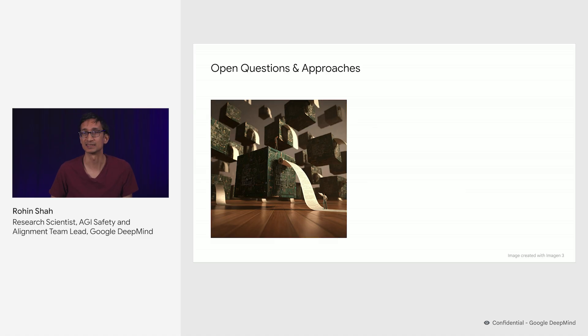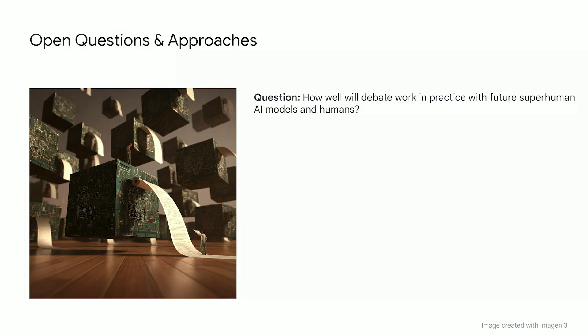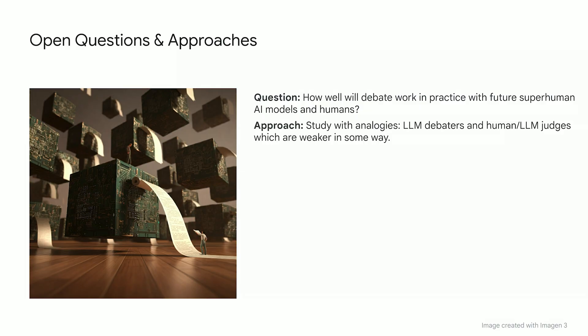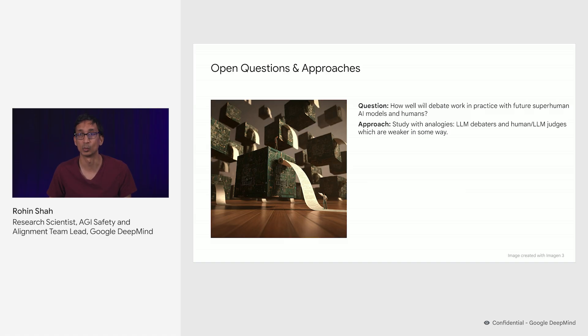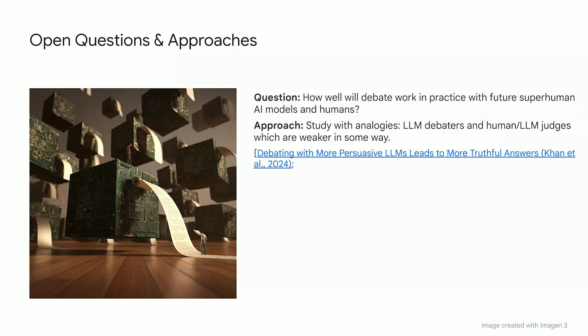So what's left to be done in research on amplified oversight? Actually quite a lot. One question is how well debate will work in practice with future very powerful AI systems. One approach here is to try and study this with analogies. We don't have very powerful superhuman AI systems right now, but we can use large language models or LLMs as proxies for them. So we could have LLMs as debaters and humans or LLMs as judges, and try and create some asymmetry between them to make the judges weaker in some way, and then study when the LLM debaters can be trained even from that weaker judge. You can look at these two papers for more details.